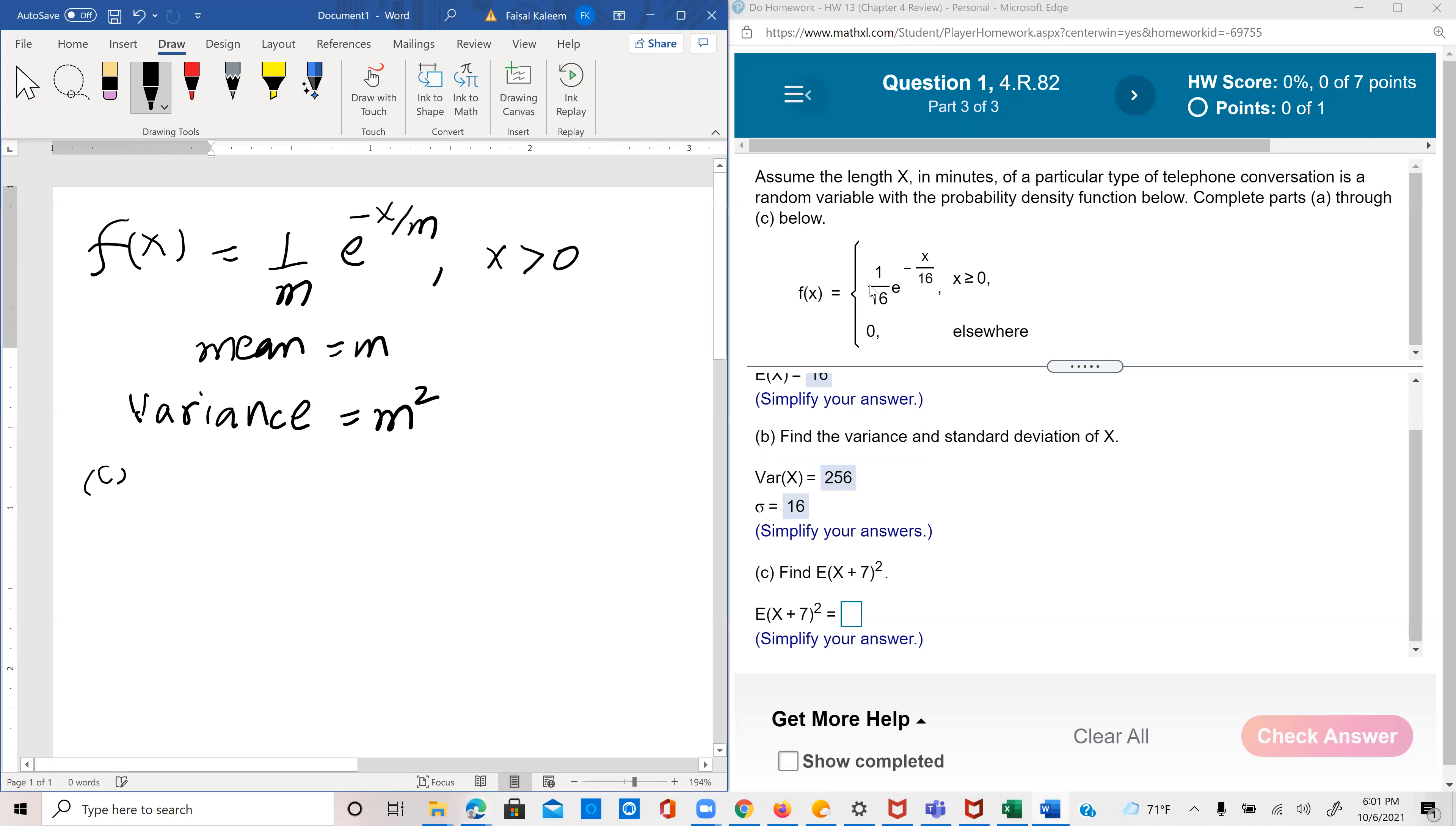We first write the x plus seven square in expanded form. So that'd be E of x square plus 14x plus 49. And then we use the property that the expected value distributes like this. So it'd be E of x square plus 14 E of x plus 49.